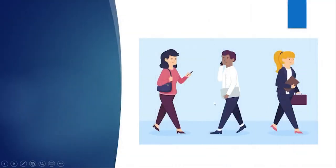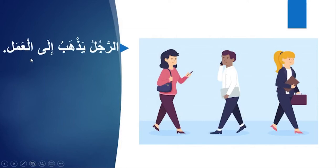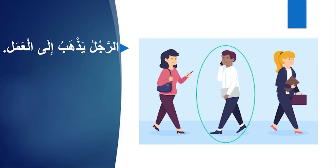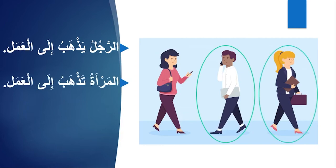Look at the picture here. الرجل يذهب إلى العمل — 'The man is going to work.' Here يذهب is فعل مضارع, a verb in the present form. المرأة تذهب إلى العمل — 'The woman is going to work.' فعل مضارع comes with ي if you are speaking about a man — يذهب — and with ت if you are speaking about a woman — تذهب.